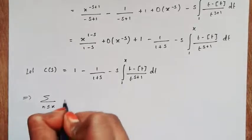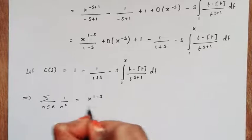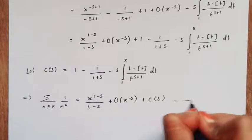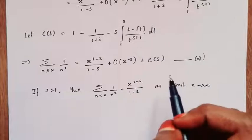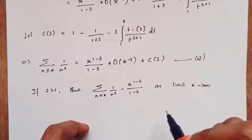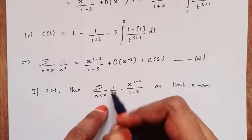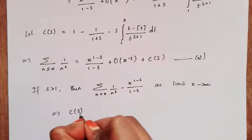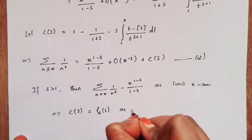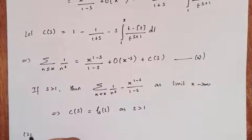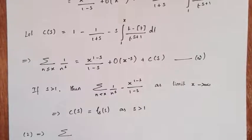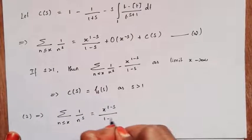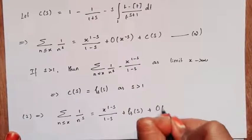Substituting this value, we get the sum over n less than or equal to x of 1 by n power s equals x^(1-s) by (1 minus s) plus big O of x^(-s) plus C(s) — mark this as equation 2. We know that the Riemann Zeta function definition for s greater than 1 gives: the limit as x tends to infinity of the sum over n less than x of 1 by n power s minus x^(1-s) by (1 minus s) equals zeta of s. By this, C(s) equals zeta of s for s greater than 1. Substituting in equation 2: the sum over n less than or equal to x of 1 by n power s equals x^(1-s) by (1 minus s) plus zeta of s plus big O of x^(-s). Hence the proof.